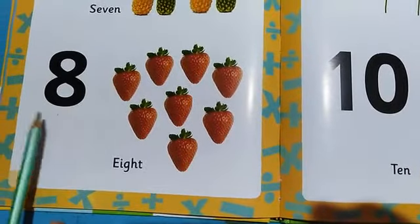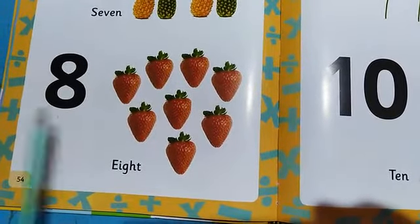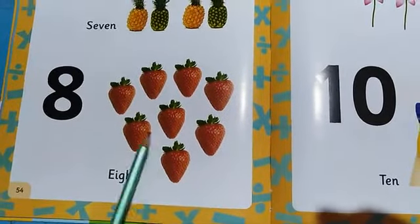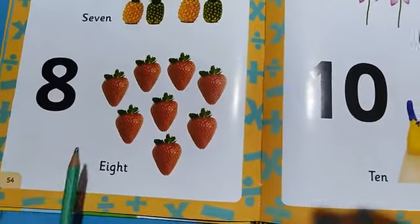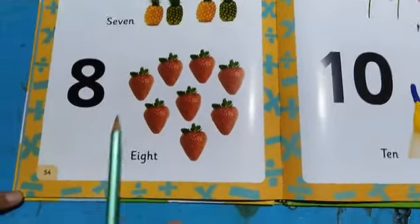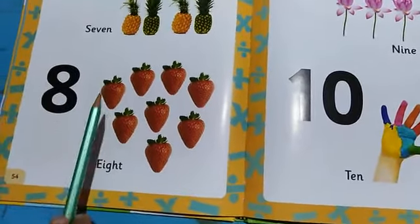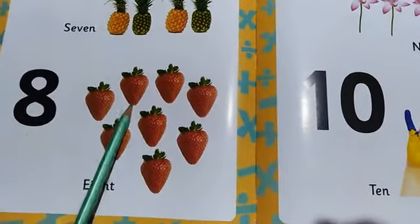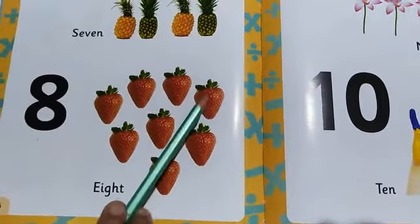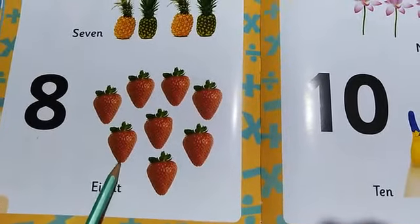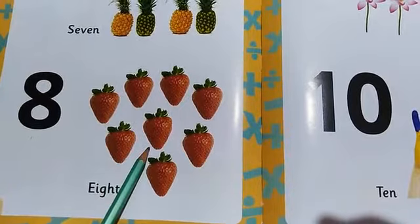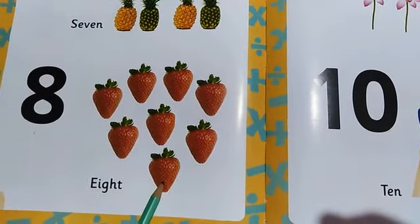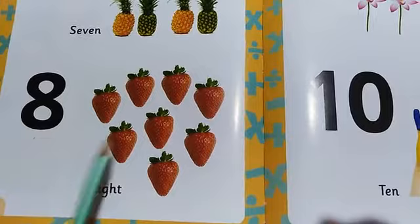Number 8 — kaun sa number hai yeh? 8 number. Yeh kya dikh rahe hain? Red, red, red — yeh hain strawberry. Kya hai yeh? Strawberry. Hum count karte hain: 1, 2, 3, 4, 5, 6, 7, 8. Kitne hain yahaan par? 8 strawberry.